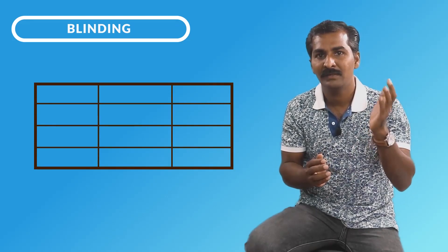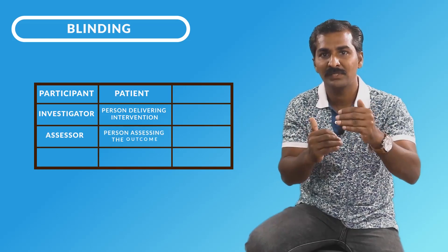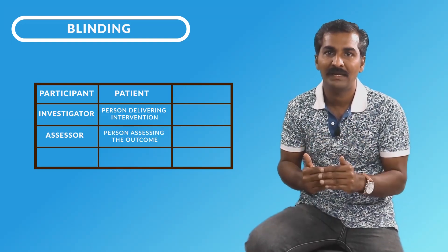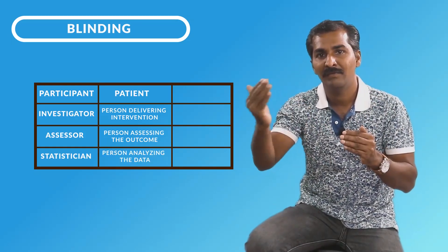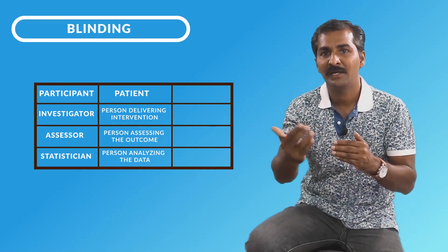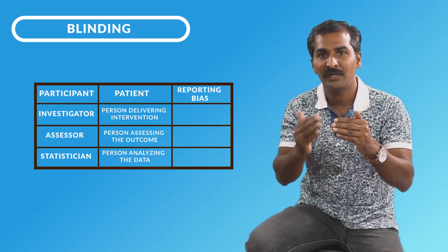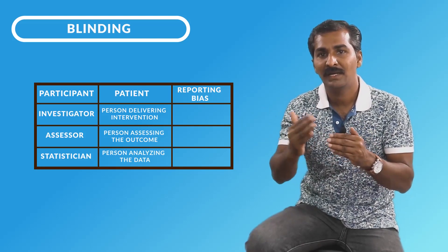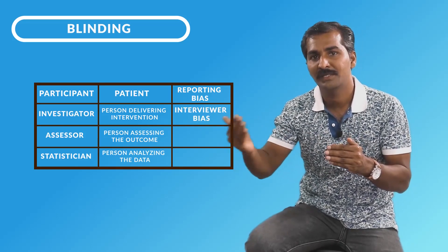The third process is blinding — whom to blind and why. There are four people involved: the participant, the investigator who gives the intervention, the assessor who assesses the outcomes (sometimes these two may be the same person), and finally the statistician. The participant should not know about the nature of the intervention, otherwise they'll have reporting bias. The investigator should not know, otherwise they'll have interviewer bias. The assessor should not know, otherwise they may have ascertainment bias.